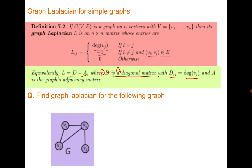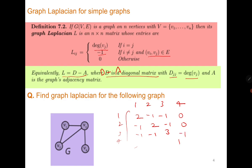For the following graph, compute the graph Laplacian. First mark the diagonal entries — labelling is required. The degree of v1 is 2, v2 is 2, v3 is 3, and v4 is 1. Now v1 is adjacent to v2 and v3, so mark them minus 1. Then v2 is adjacent to v1 and v3. v4 is adjacent to v3 only. This gives the required graph Laplacian.